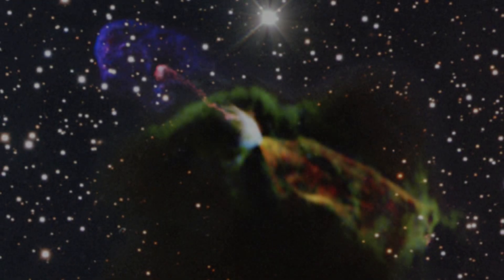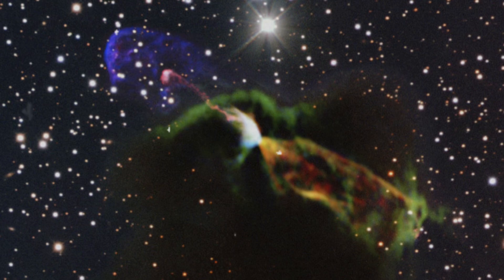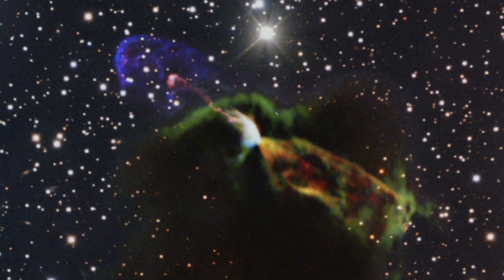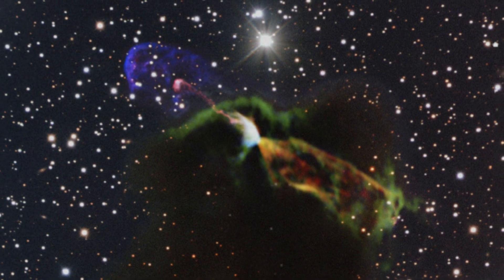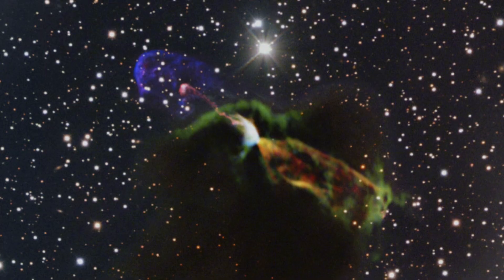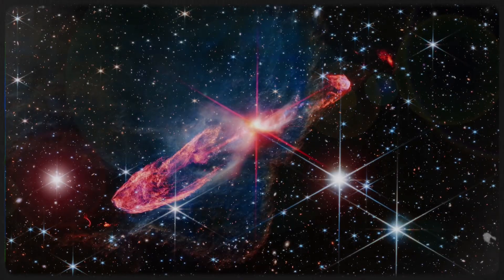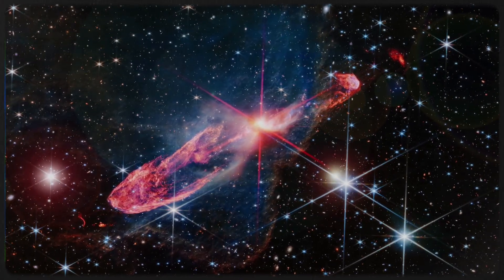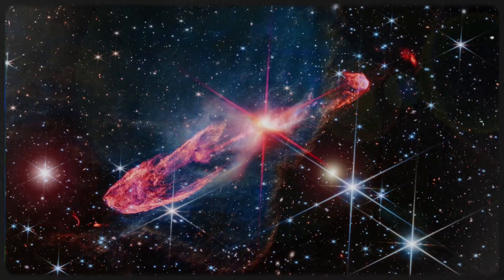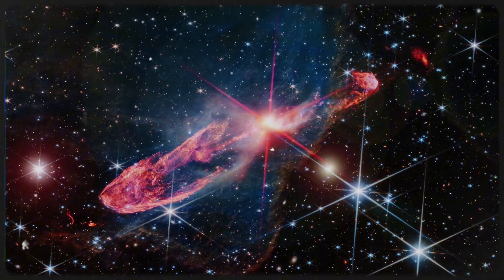In this image, Herbig Haro 49x50 is shown in all its chaotic beauty. The reddish-orange outflow structure reveals a complex ballet of motion and matter. You're looking at the raw, dynamic forces of star formation in action.